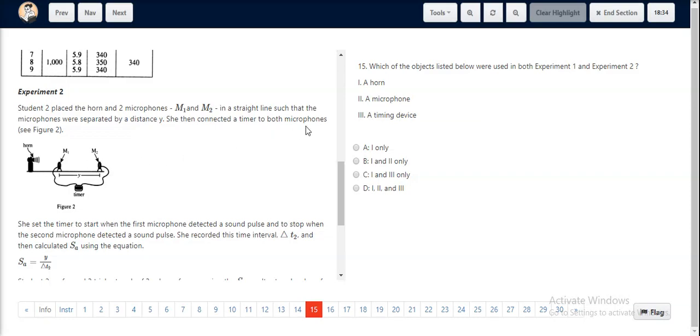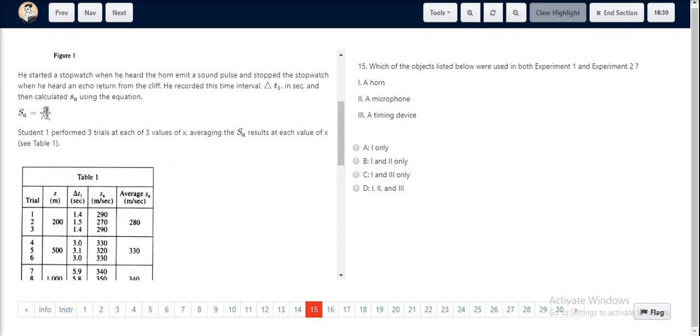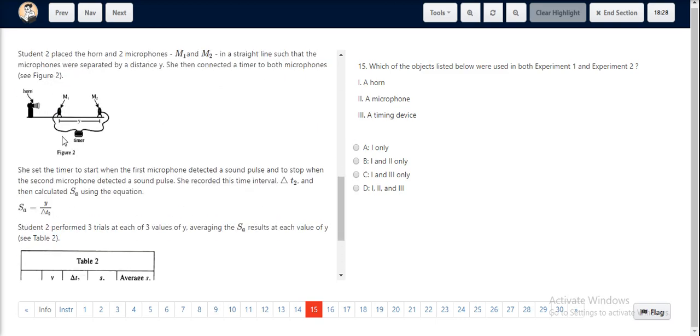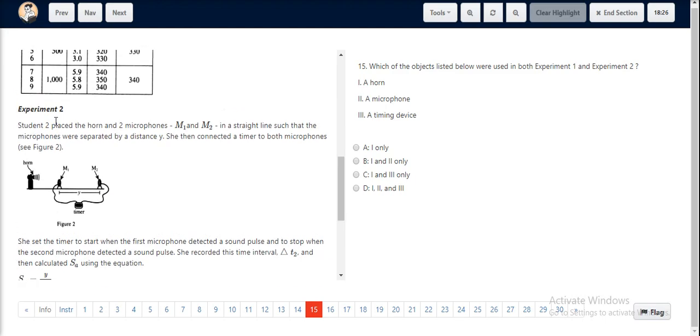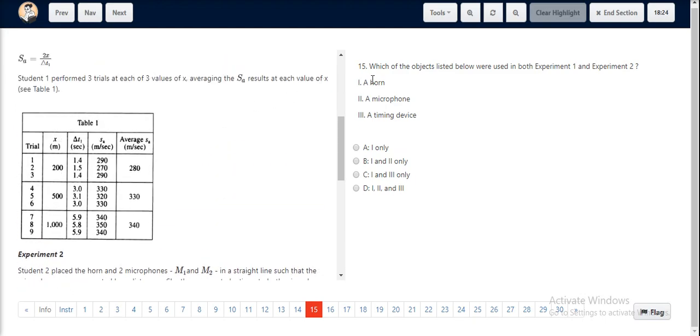For question number 15, we look at all the objects and see whether they were used in experiment 1 and/or in experiment 2. So we look at the horn first.